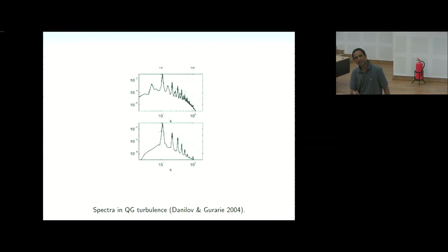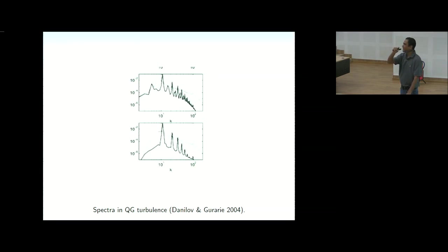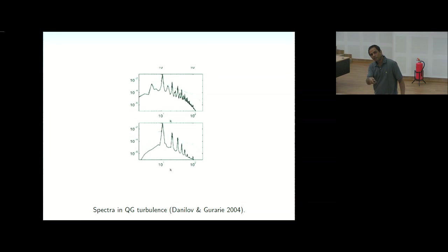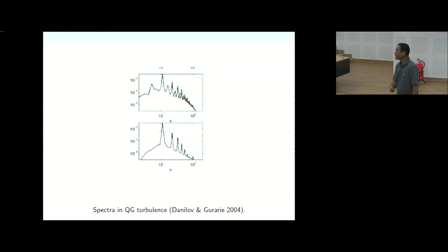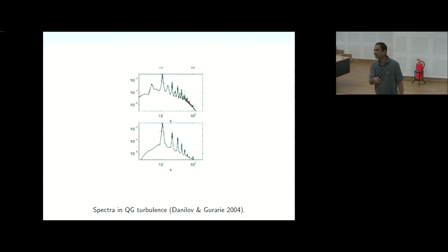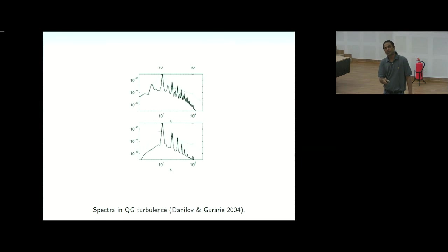More recent simulations by Danilov show the same picture: jets visible in the vorticity field, an isotropic spectrum close to k^{-5/3} matching k_y, while the k_x spectrum is completely different — reflecting the coherent jet structure. The envelope of the peaks in k_x may scale as k^{-5}, as hypothesized by Rhines, though the robustness of this exponent is uncertain.